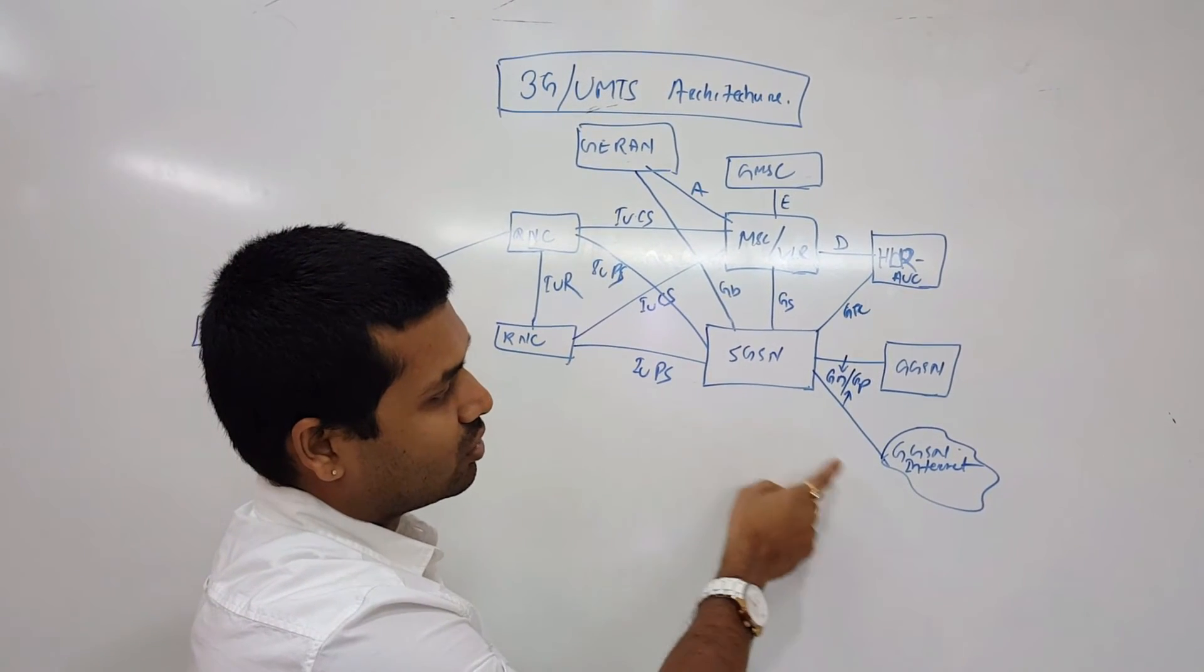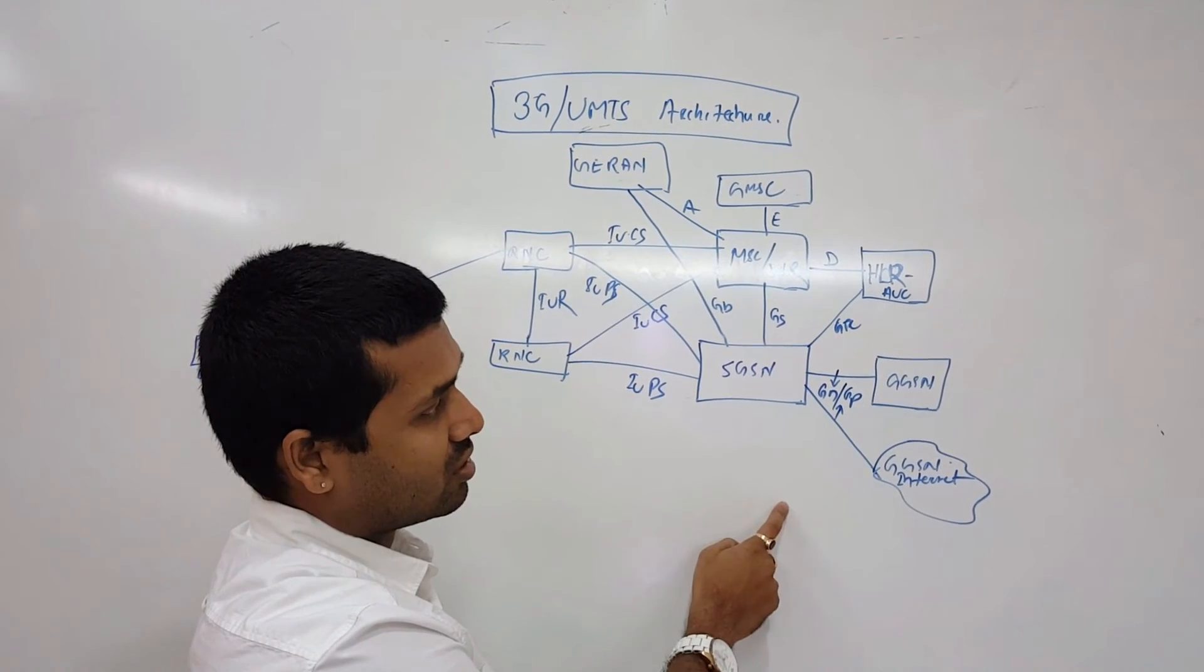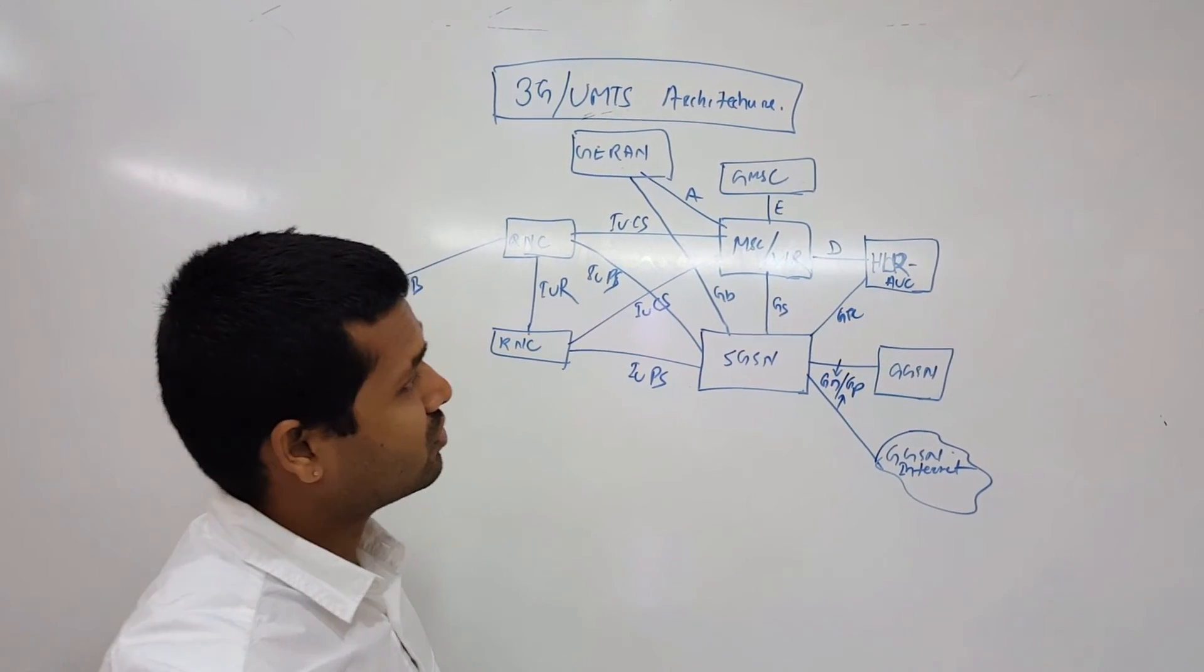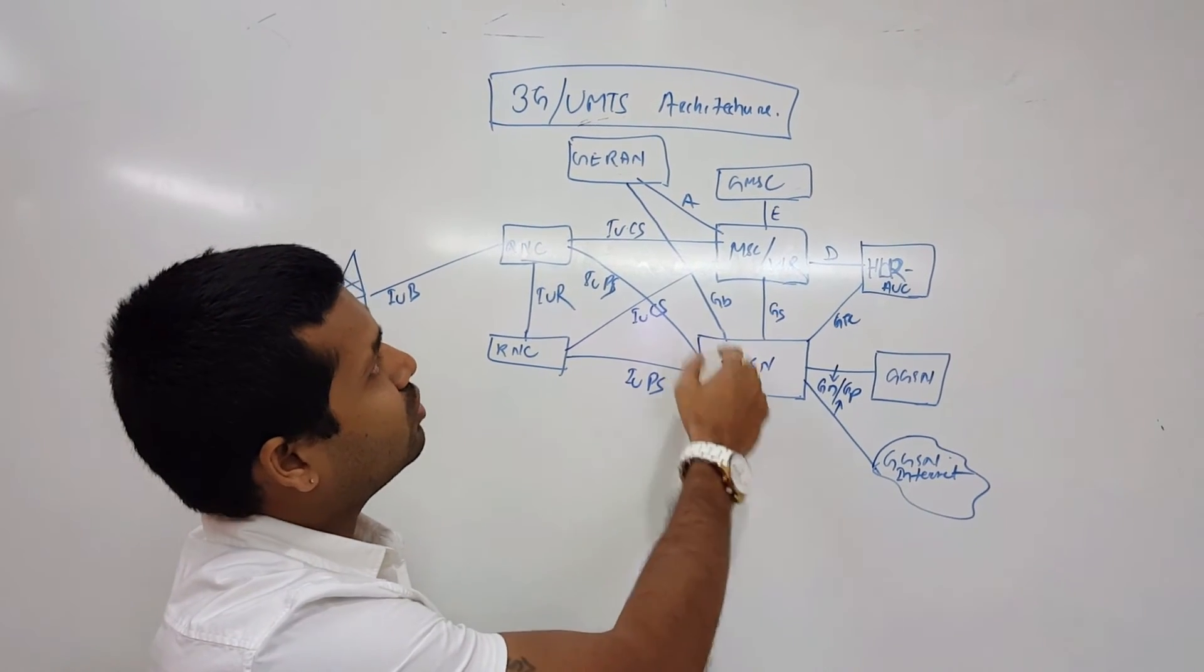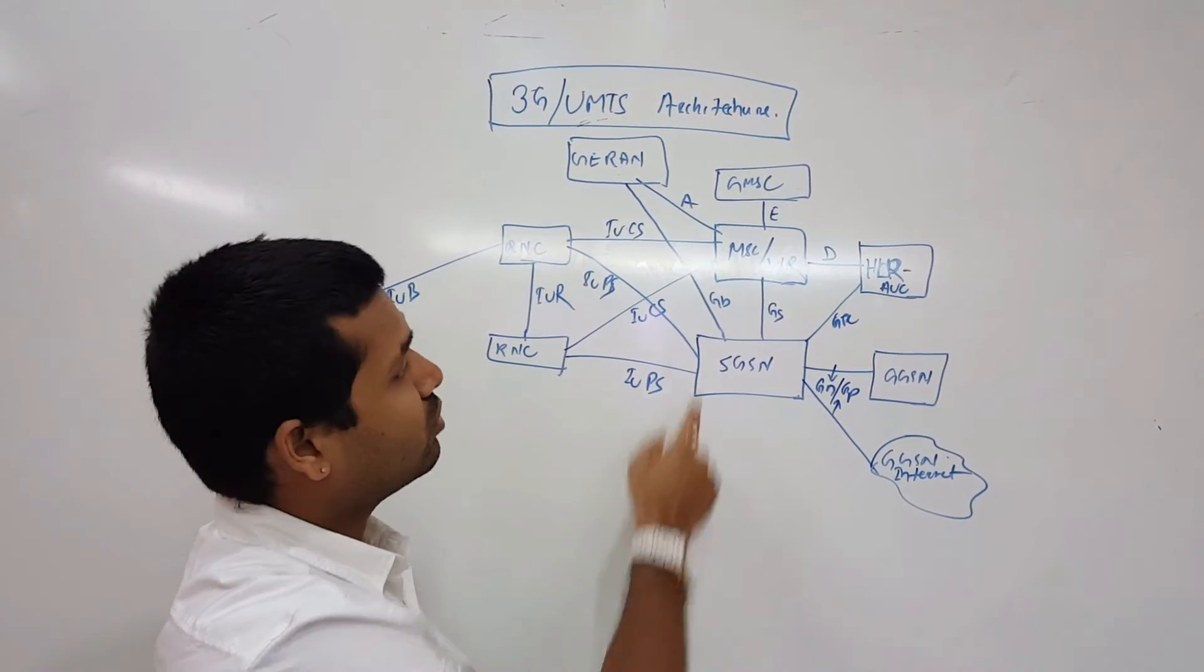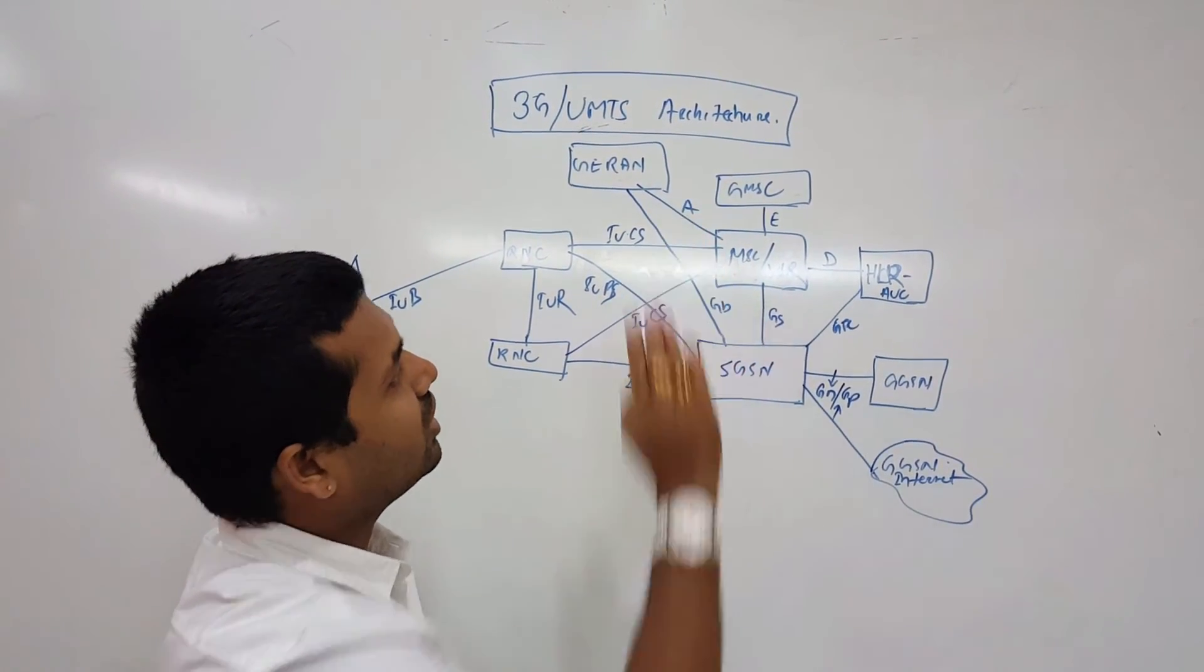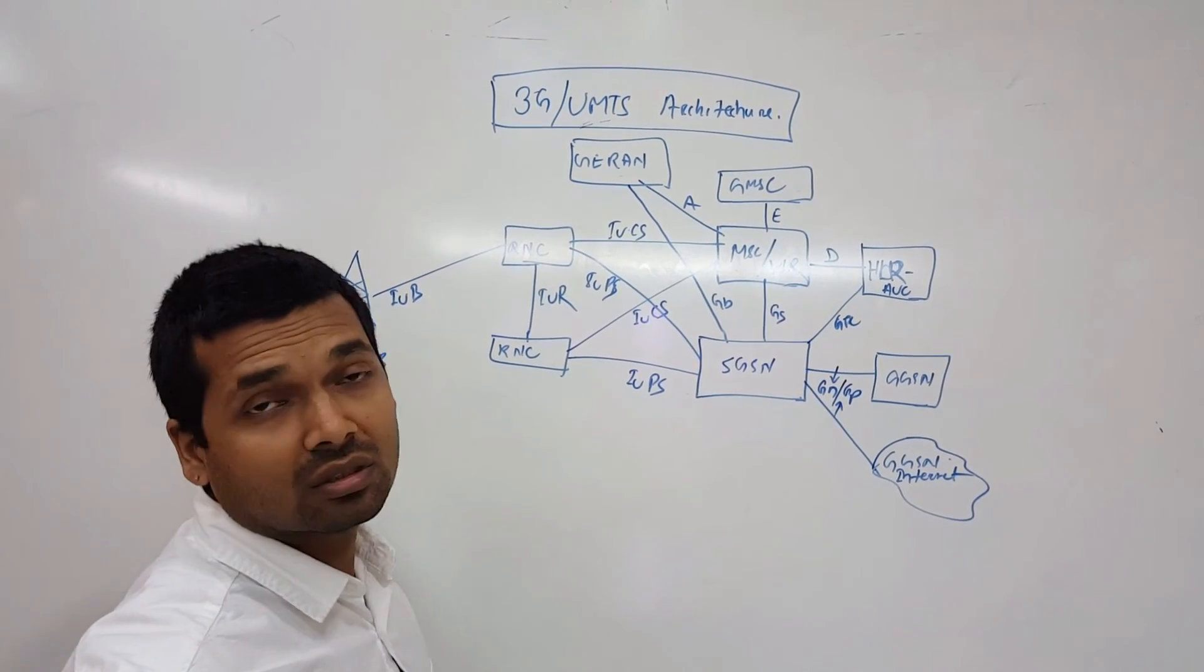From SGSN towards GRAN legacy network, 2G network, we are having GP interface. From GRAN to MSC we are having A interface. That's all about the 3G architecture and interfaces.